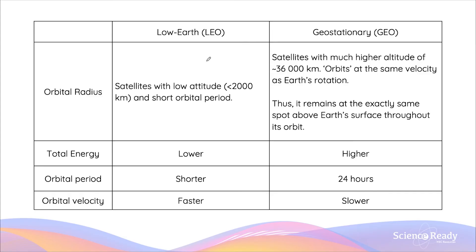This table summarizes the differences between low Earth orbits and geostationary orbits. LEOs have a much lower altitude, whereas geostationary orbits have a higher and very specific altitude of 36,000 kilometres. In terms of total energy, LEOs have lower energy and GEOs have higher energy. LEOs have a much shorter orbital period, while GEOs have an exactly 24-hour period. Correspondingly, LEOs have a faster orbital velocity, whereas geostationary orbits have a slower orbital velocity.